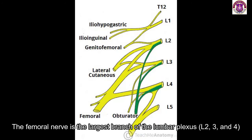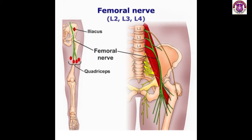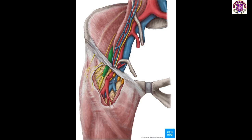First, we're going to discuss the femoral nerve. It is the largest branch of the lumbar plexus, from L2, L3, L4. It emerges from the lateral border of the psoas major muscle within the abdomen and passes downward in the interval between the psoas major and iliacus. It enters the thigh lateral to the femoral artery and sheath, behind the inguinal ligament. It is not inside the sheath.